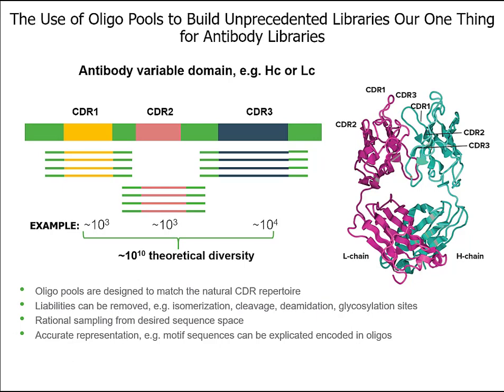The reason why this is unprecedented compared to how others have done this in the past is that previously, people have used degenerate oligos—mixtures of nucleotides or trinucleotides—to encode for diversity in these loops, which can oftentimes lead to mistakes or unnatural sequences that may not be in the natural human repertoire. Here, because I'm actually synthesizing each sequence explicitly, I can make sure that those sequences exactly match what's seen in nature. In addition, I can remove sequences up front that might lead to liabilities in the antibody sequence—for example, isomerization sites, cleavage sites, deamidation sites, or even glycosylation sites. And I can encode for specific motifs in those sequences if I choose to, enabling me to go after some difficult targets.